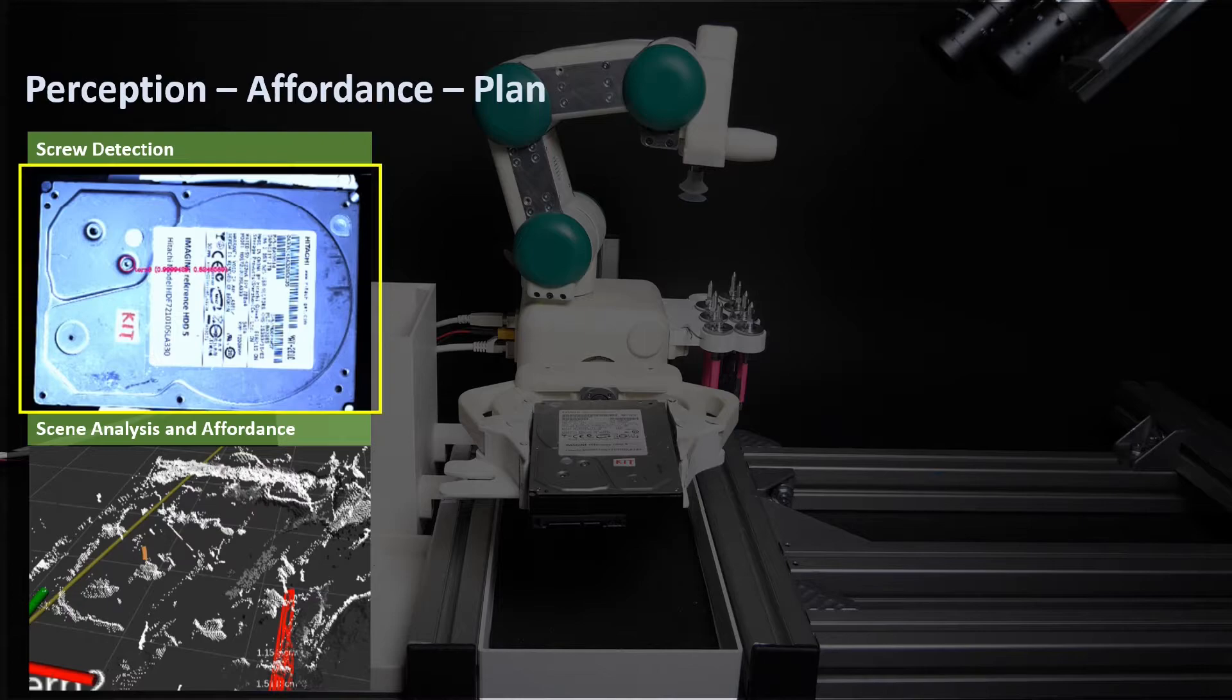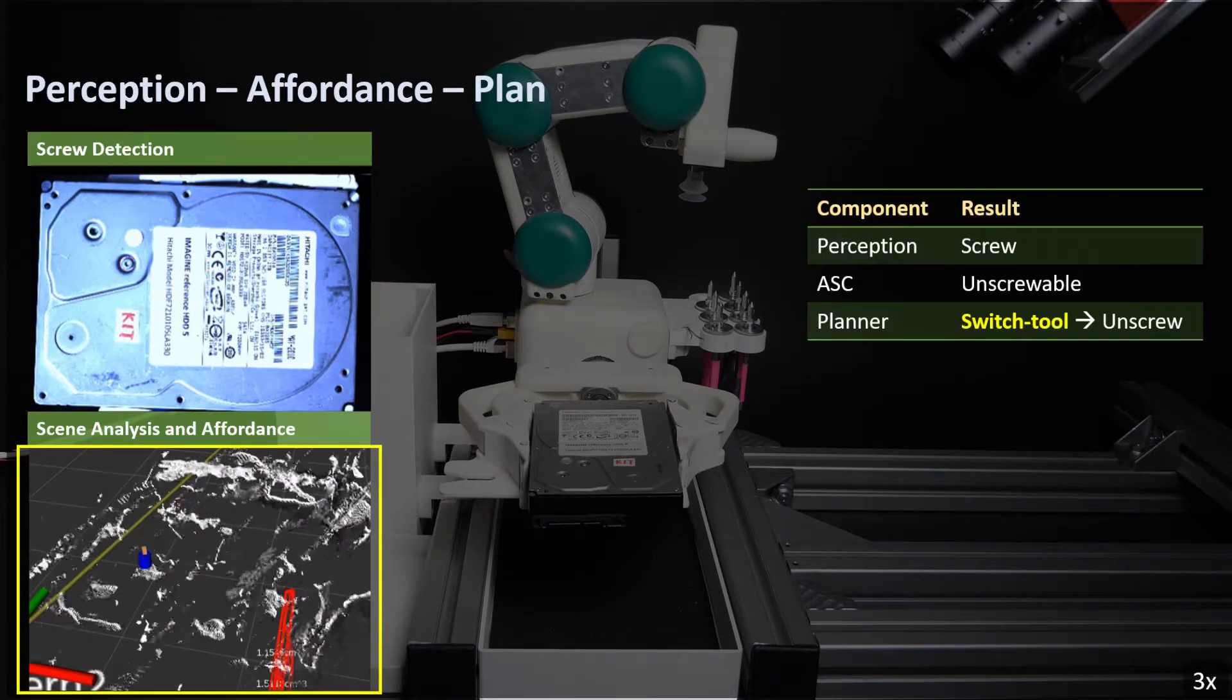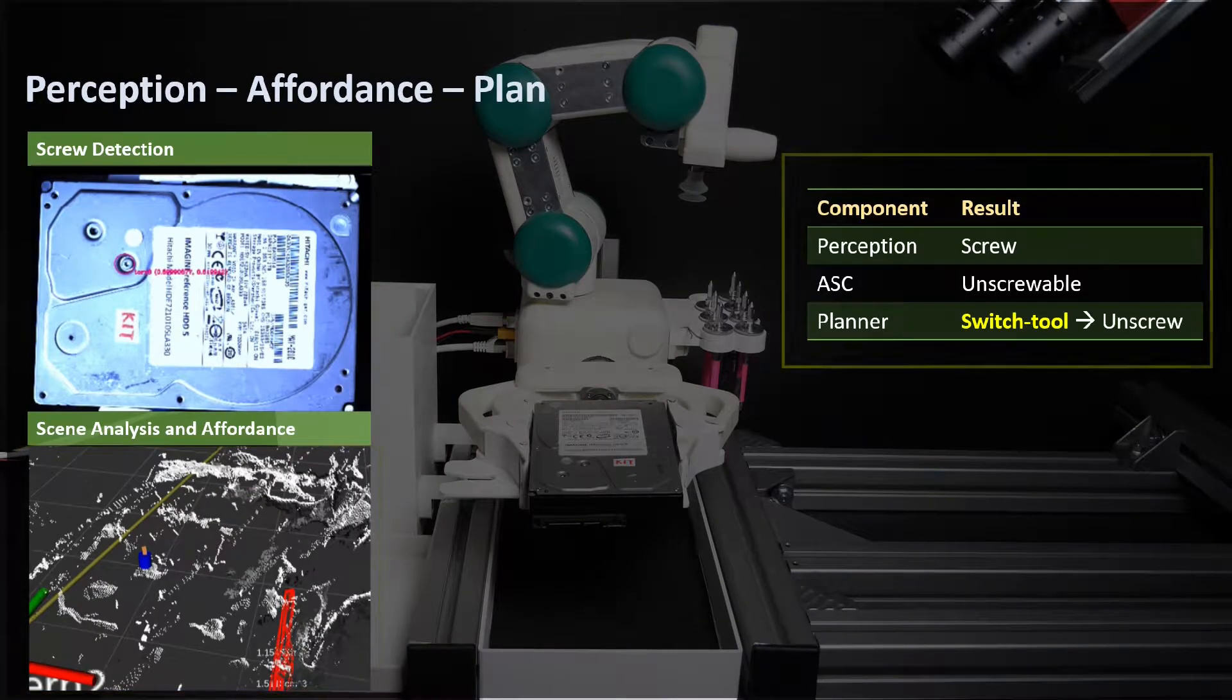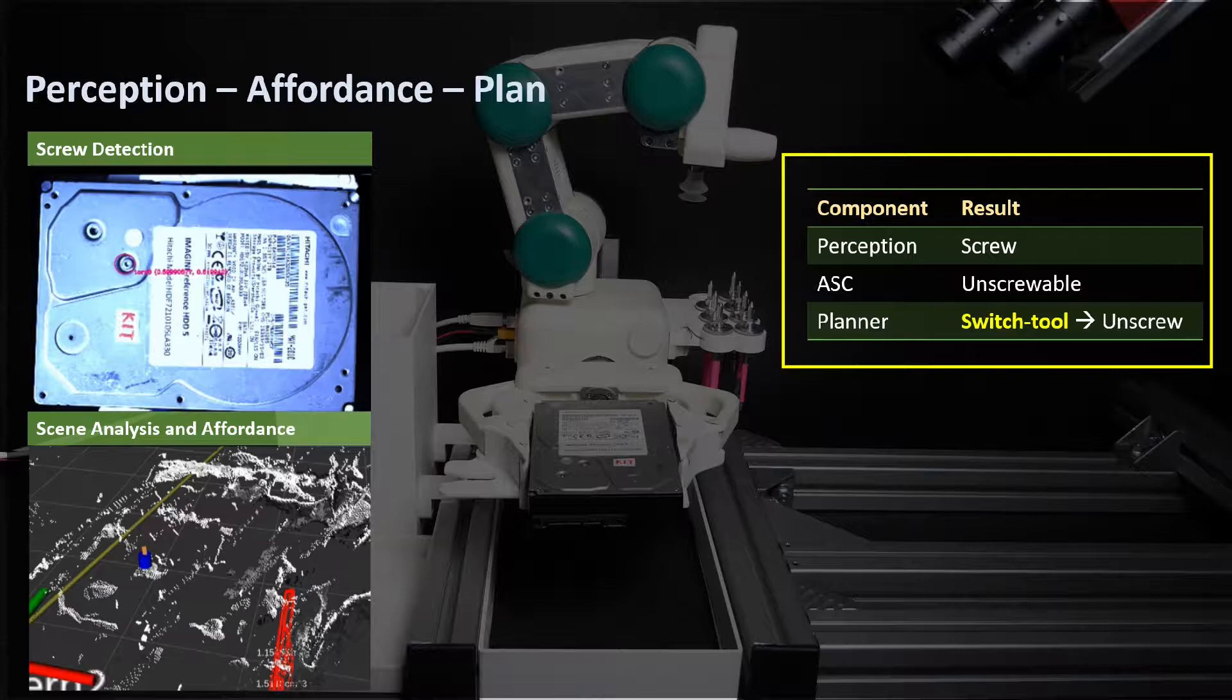First of all, the state estimation component captures the scene using an RGB camera from the top and runs screw detection and classification. Here, one screw of type TOX8 is detected on the lid, and ASC detects the unscrewable affordance as visualized on the point cloud. And then the planner decides to switch to the screwdriver for the unscrew action.